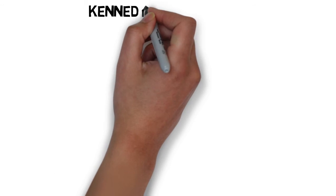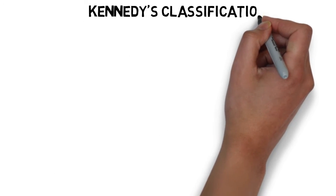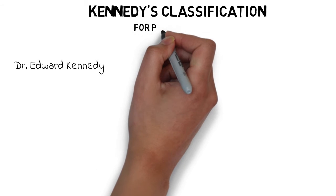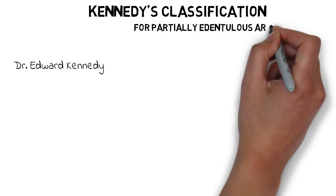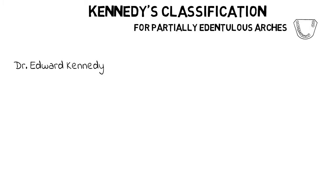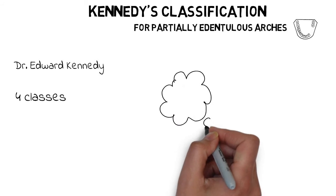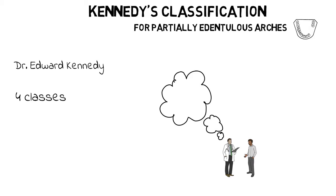Hello and welcome back everyone. Kennedy's classification, proposed by Dr. Edward Kennedy himself, classifies the partially edentulous state into four different classes based on the position of the absent teeth, which could then be treated with a removable partial denture. This classification allows us to formulate a treatment plan, making it easier to communicate between professionals and also easier for visualization of an edentulous arc.